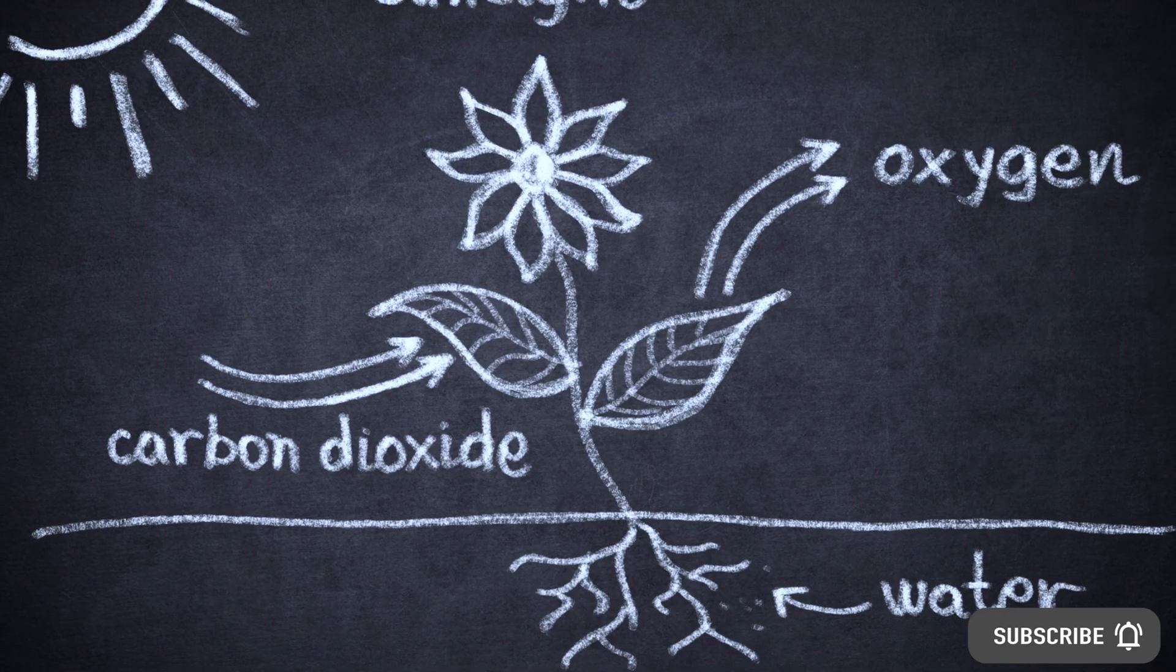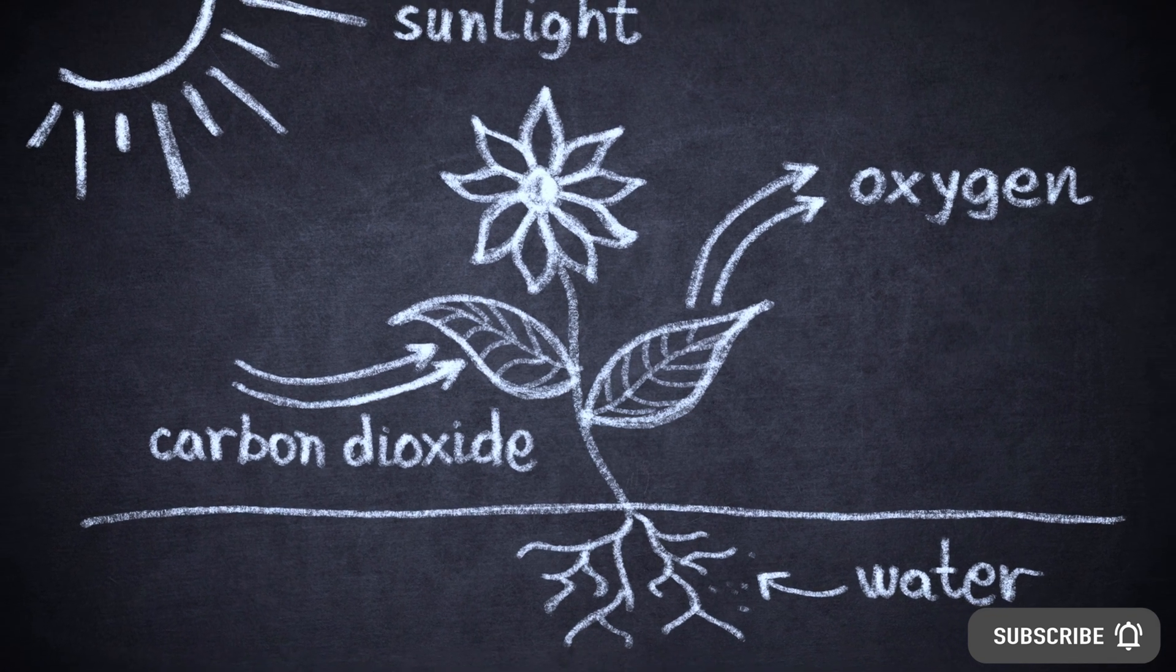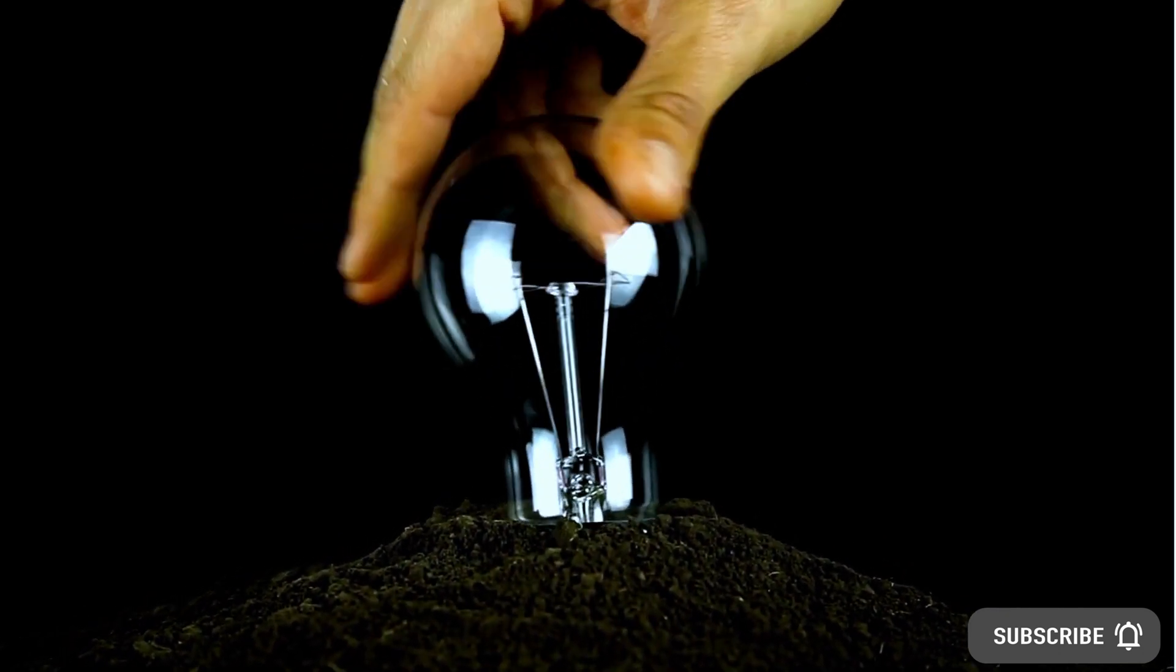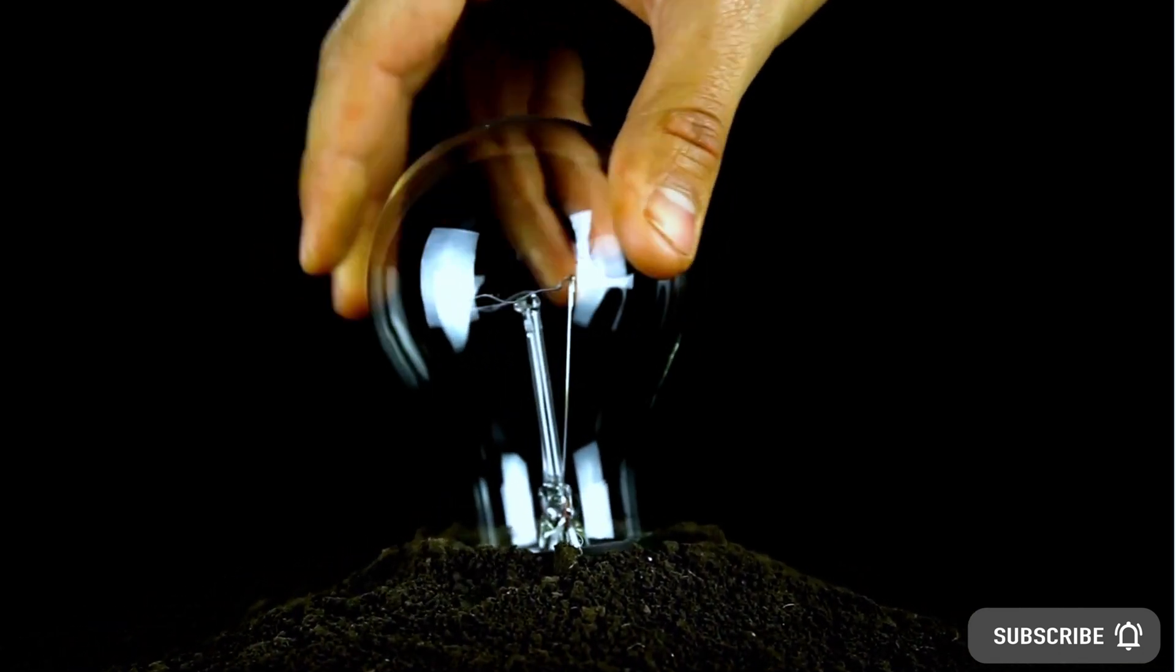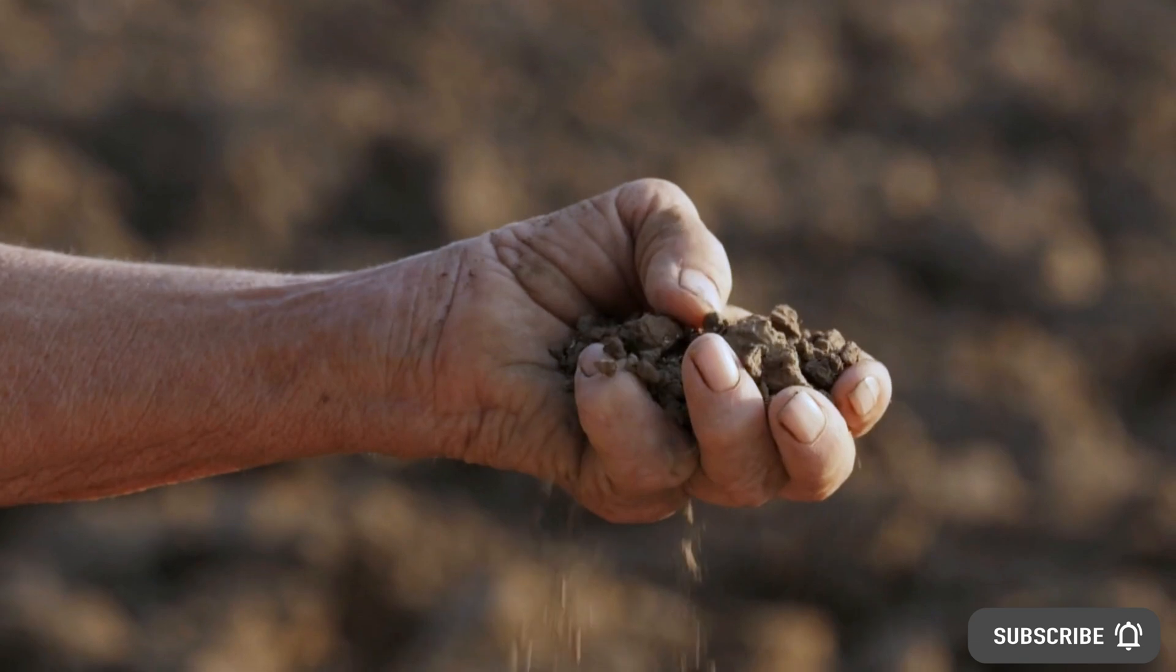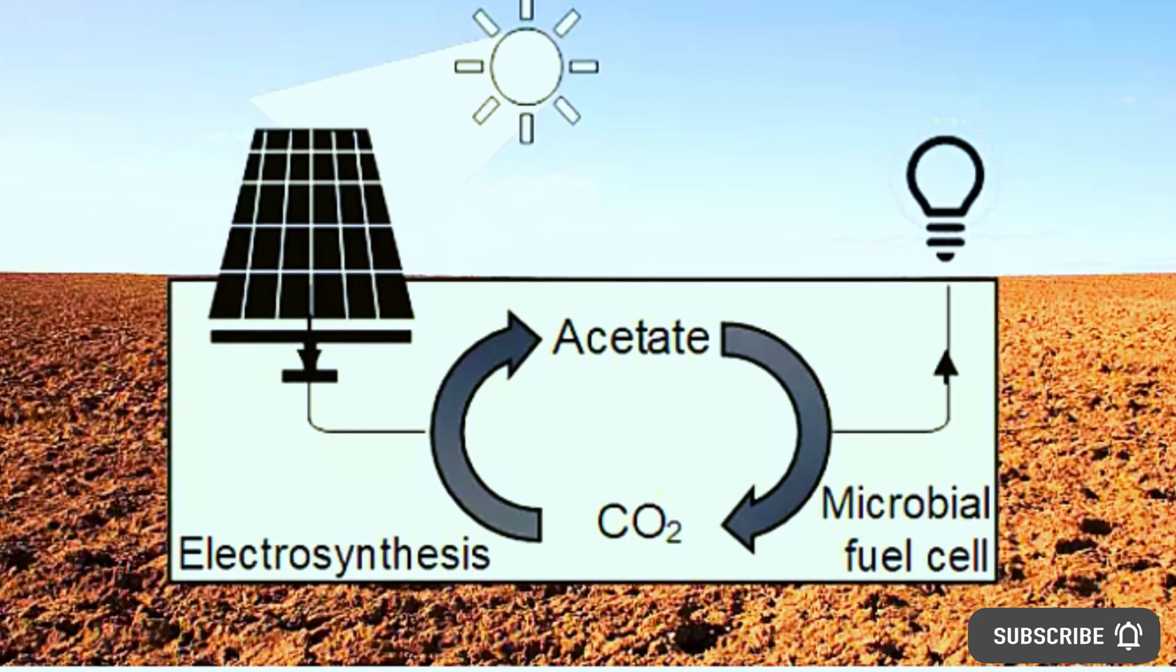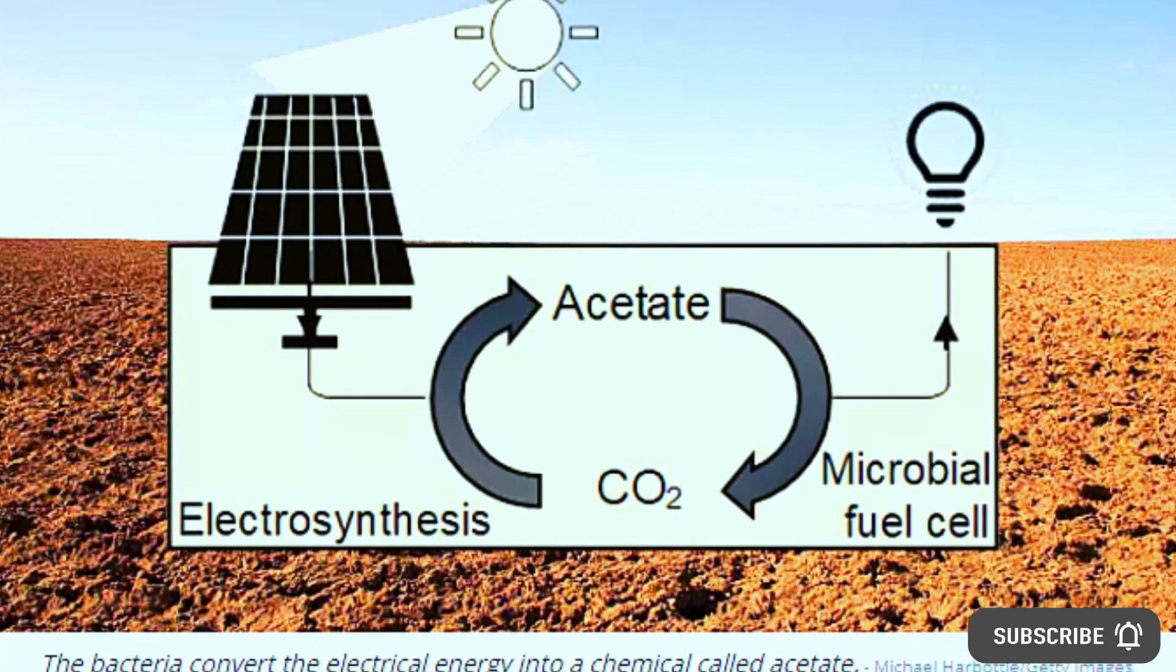It's akin to photosynthesis where plants intake CO2 and transform it in their cells, except in this case, everything is happening underground instead. Electric power, CO2, action. The microbial life gets to work using the energy to reduce the carbon dioxide in order to produce a more complex molecule called acetate.